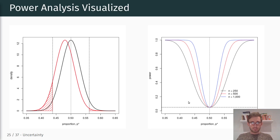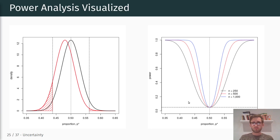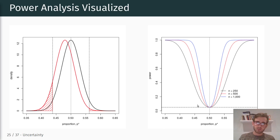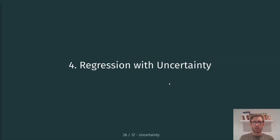The power of a statistical test is a function of both the sample size and the assumed true population value mu star. If we know what level of statistical power we want to achieve, and we have an assumed true population parameter, we can then determine the required sample size for our analysis. In the next video I'll talk about hypothesis testing in the context of regression and how to introduce uncertainty into our regression framework.